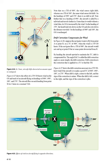On a TH of 000°, the wind causes right drift, whereas on a TH of 180°, the same wind causes left drift. On headings of 090° and 270°, there is no drift at all. On a heading of 090°, the aircraft is aided by a tailwind and travels farther in one hour, so GS is increased. On the heading of 270°, the headwind cuts down on GS and the distance traveled. On the headings of 000° and 180°, GS is unchanged.